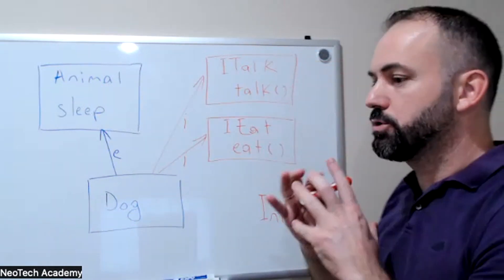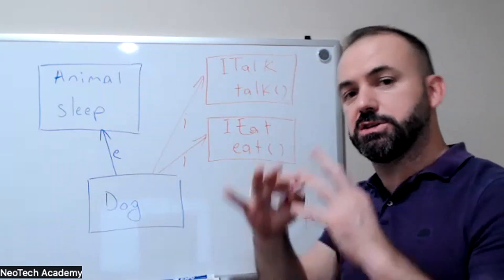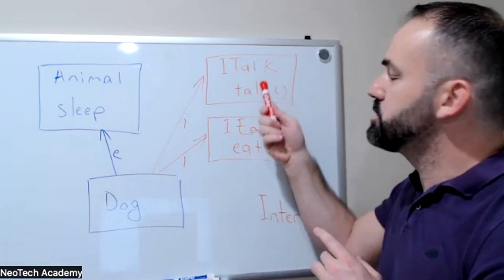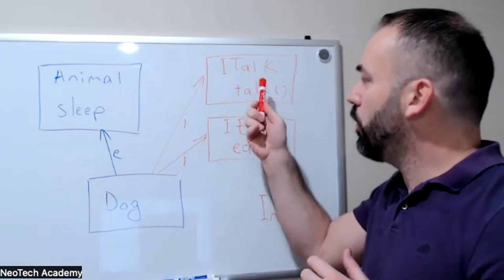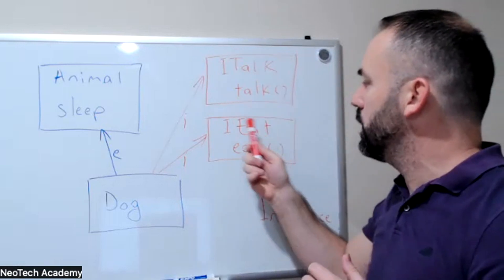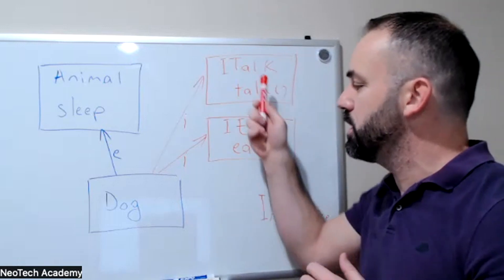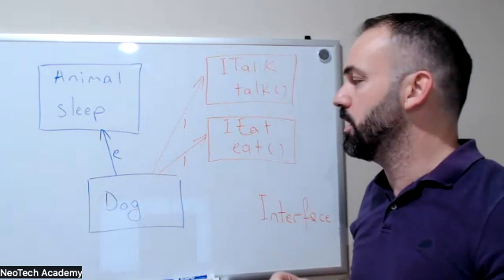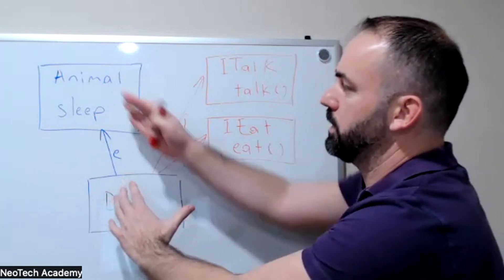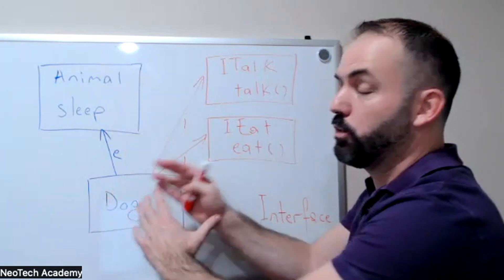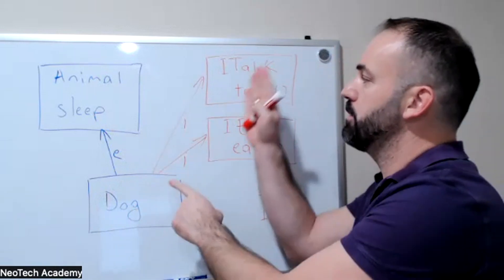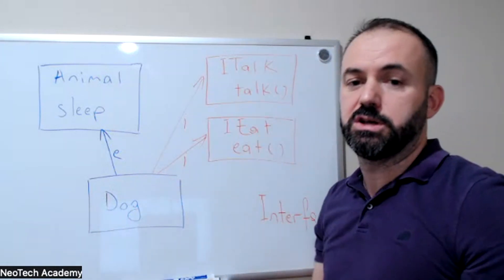Interfaces are similar to abstract classes, but whatever methods there are, they are abstract. So the talk method that comes from ITalk and the eat method that comes from IEat, they have to be implemented in the dog class. One class can extend one and only one class, but one class can implement multiple interfaces.